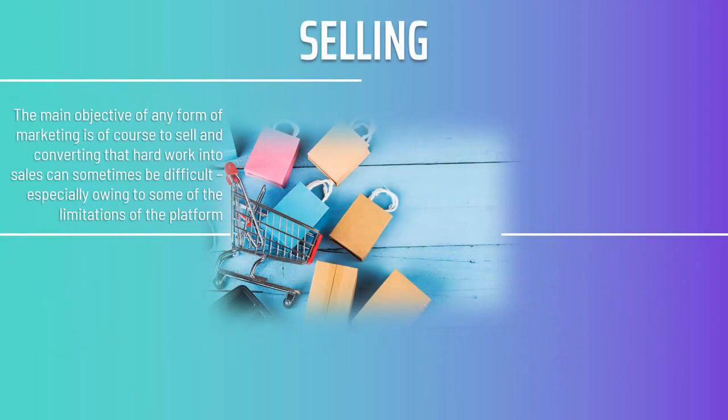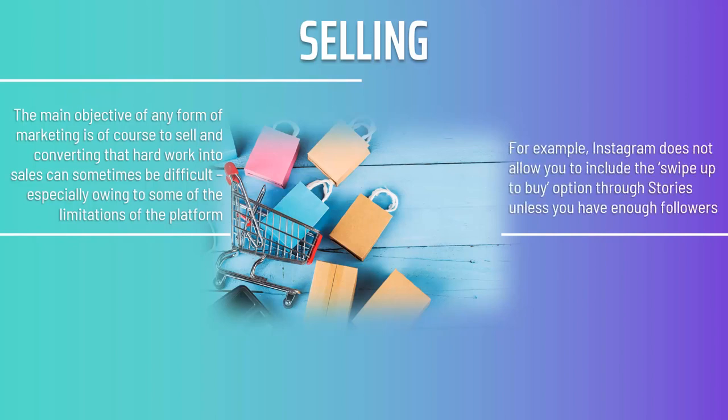Selling: the main objective of any form of marketing is of course to sell, and converting that hard work into sales can sometimes be difficult, especially owing to some of the limitations of the platform. For example, Instagram does not allow you to include the swipe up to buy option through stories unless you have enough followers. You can opt to use Snapchat instead, as that does include a link, but that reaches a much smaller audience and a younger demographic.